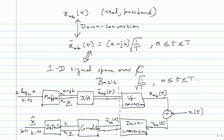You can already see why baseband correlation is better: it operates at low frequency so you can use digital processors. Many of these things are done digitally today — as soon as possible you sample and then work with numbers. Integrate-and-dump is simply addition: add all the samples, divide, and compare with a threshold. It is very easy to implement.